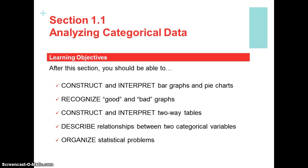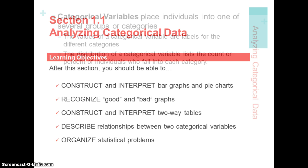At the end of this section you should be able to construct and interpret bar graphs and pie charts, otherwise known as circle graphs. Understand when we're looking at graphs that are deceptive, so be good consumers of graphs. Construct and interpret two-way tables. Describe relationships between two categorical variables and then be able to organize and interpret a real-world problem and organize the data into structures that we will use for further analysis.